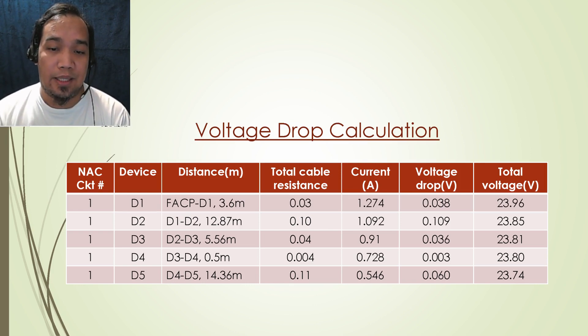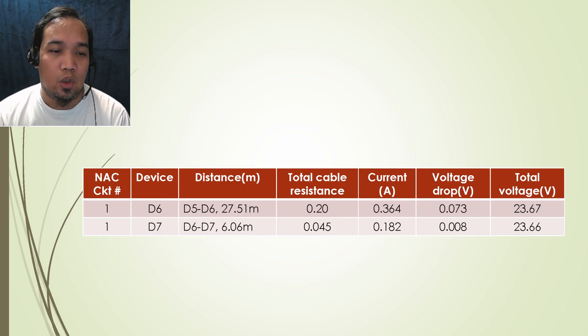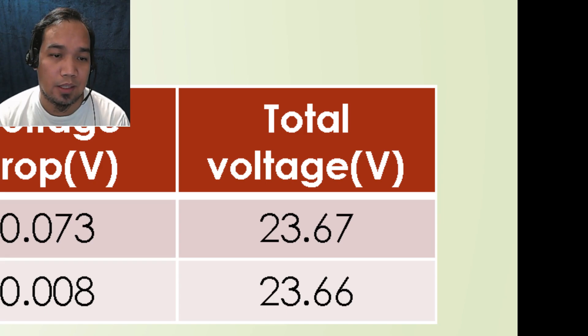The procedure will be repeated until the voltage drop for the last device is calculated. You will notice in the summary from table of NAC 1 and NAC 4, the lowest net voltage from the voltage drop is only 23.66 and 23.77 volts.